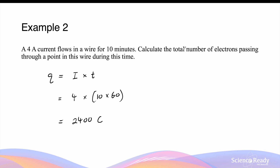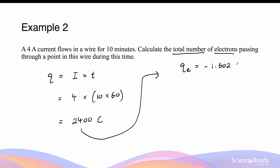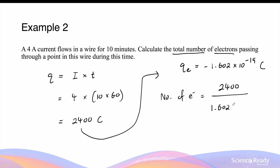This question asks for the total number of electrons passing through the point in 10 minutes, so we want to find how many electrons make up 2400 coulombs of charge. From the data sheet, the charge of an electron is 1.602 times 10 to the power of minus 19 coulombs. We can find the number of electrons by dividing the total charge by the magnitude of charge of one electron, giving us 1.50 times 10 to the power of 22 electrons.